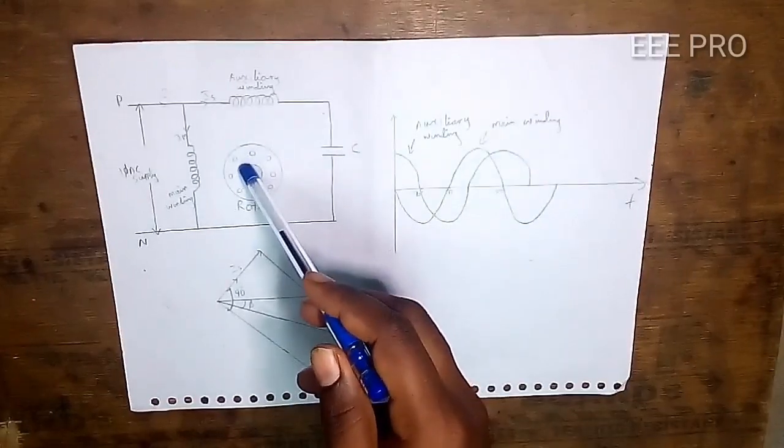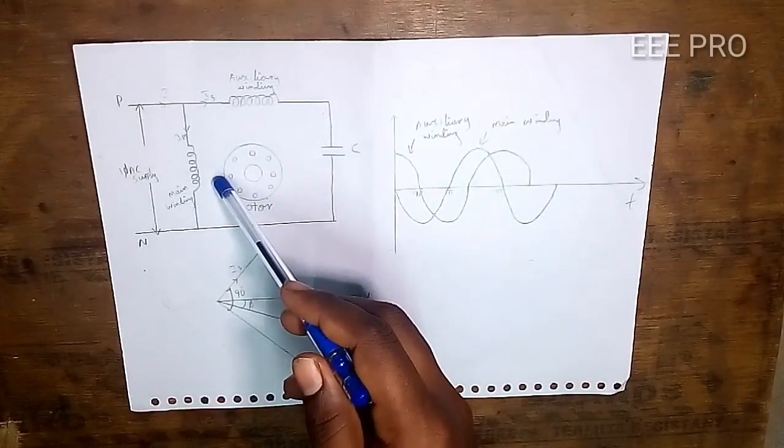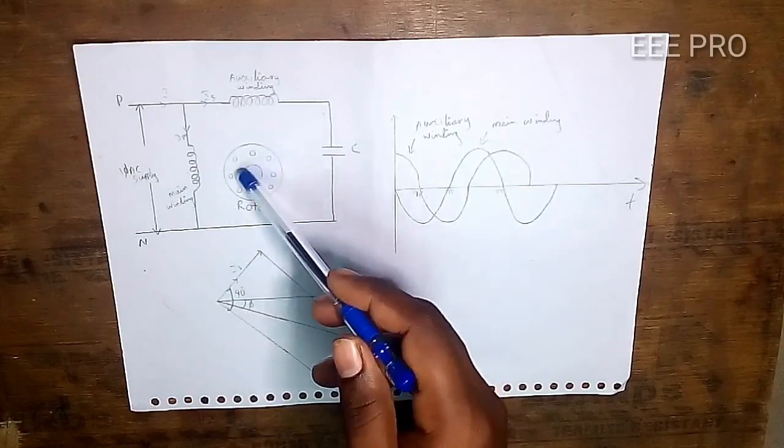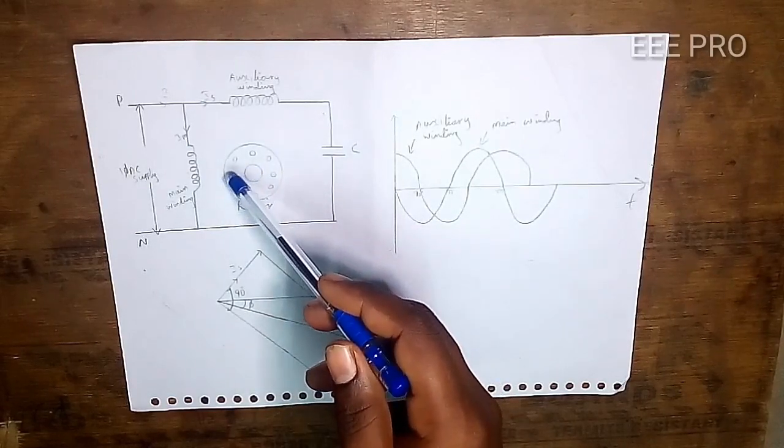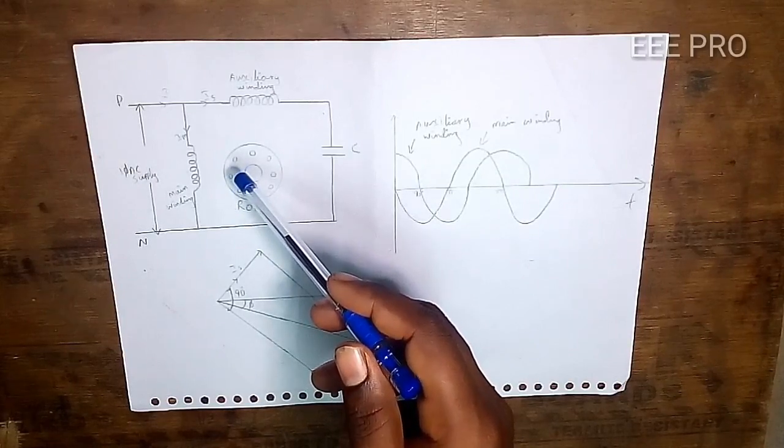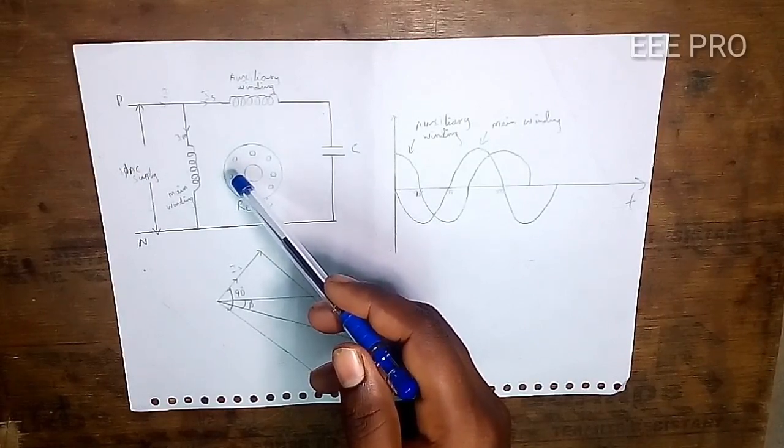When the motor rotates, this is the main winding and the capacitor in the auxiliary circuit.